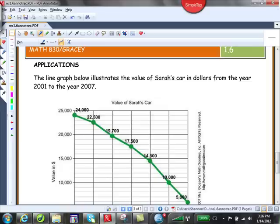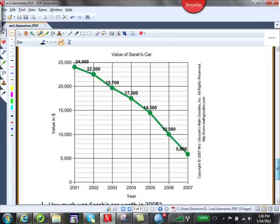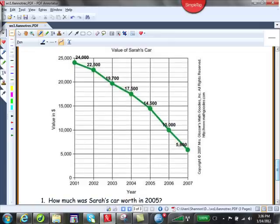Okay. So applications. This line graph illustrates the value of Sarah's car in dollars from the year 2001 to the year 2007. So this graph, if you notice that in year 2001, so let me get the little hand going. So in the year 2001 right here, her car was valued at $24,000.